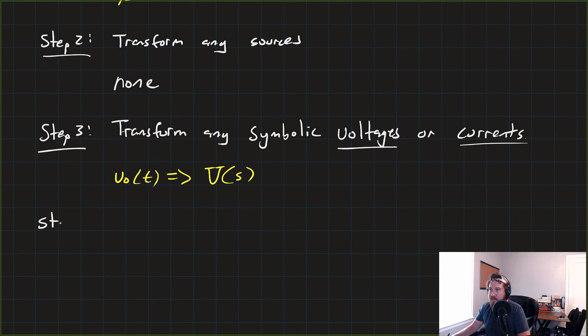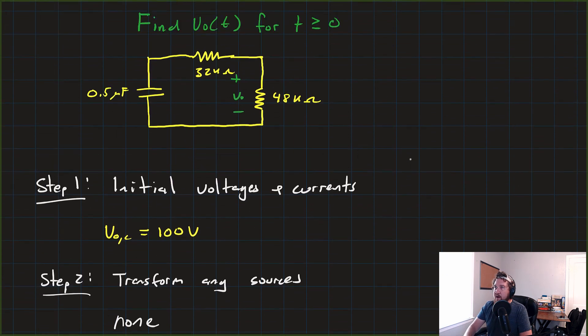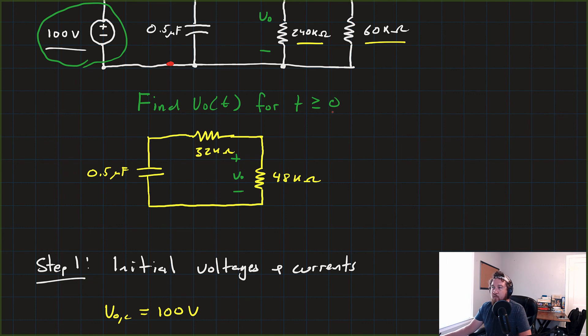Now, step four, the exciting part, is transform the circuit elements. Now, if we go back and look at our circuit that we're transforming, remember, resistors are easy. So, you know, for Zr just becomes Zr, right? Ohms stay the same.